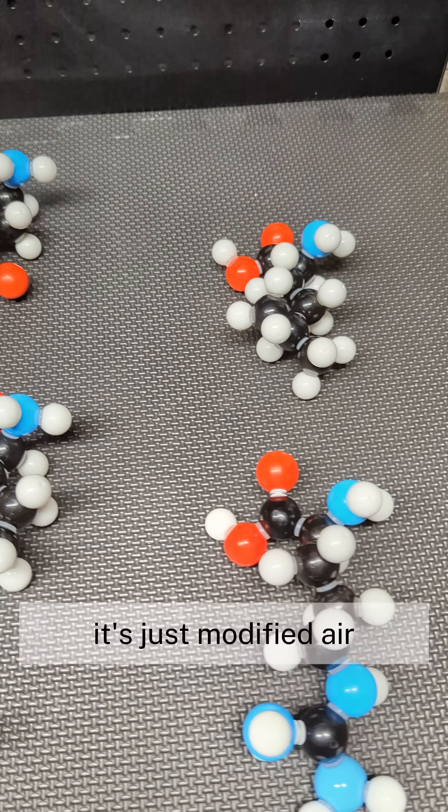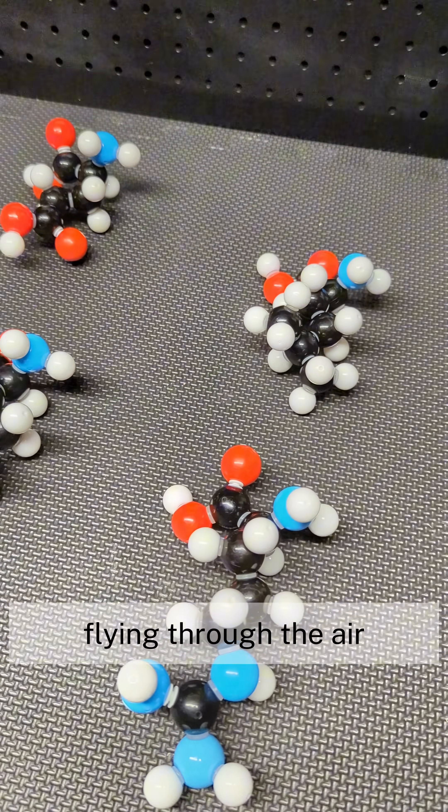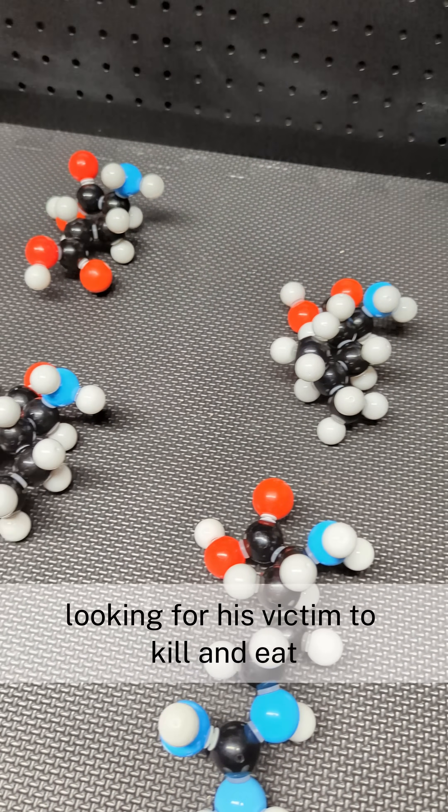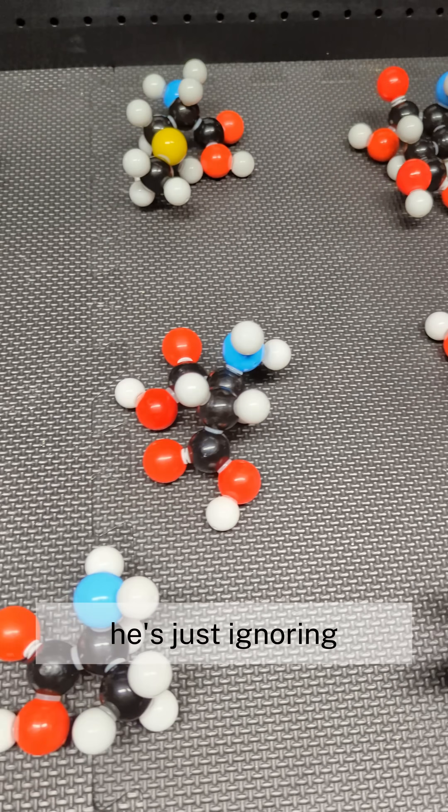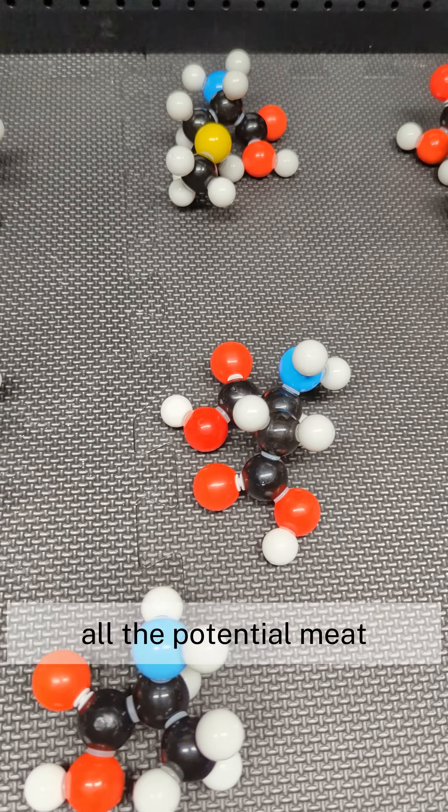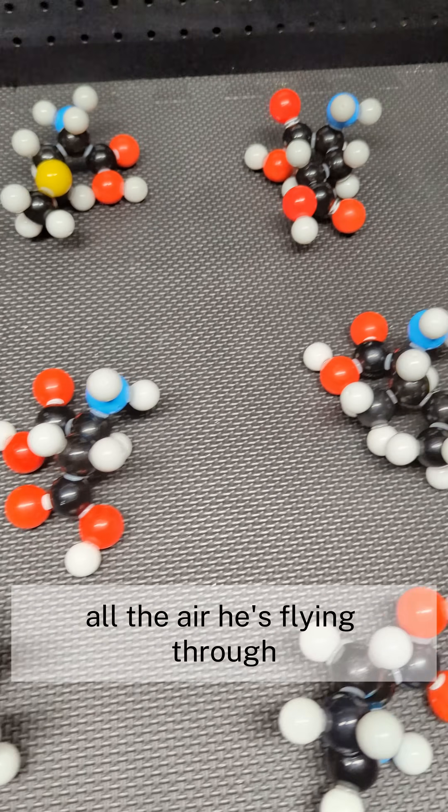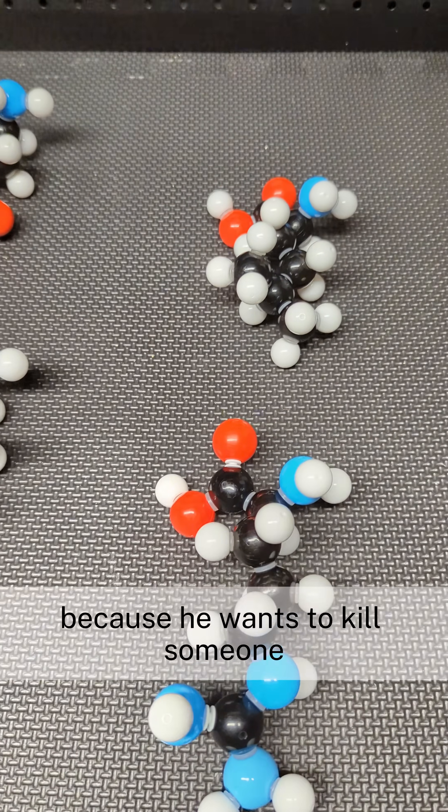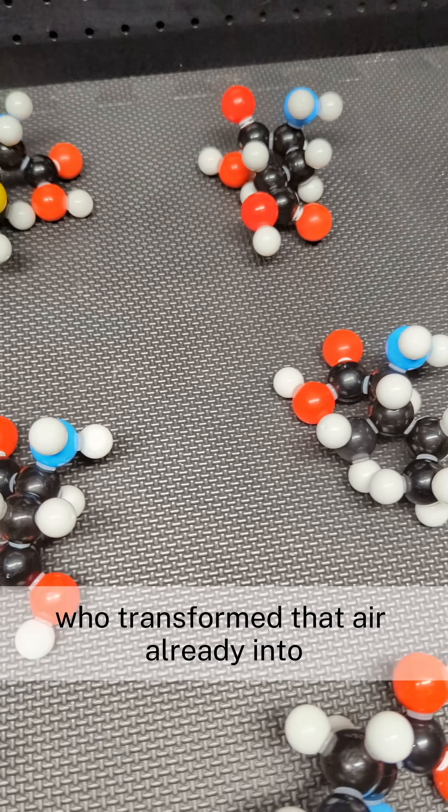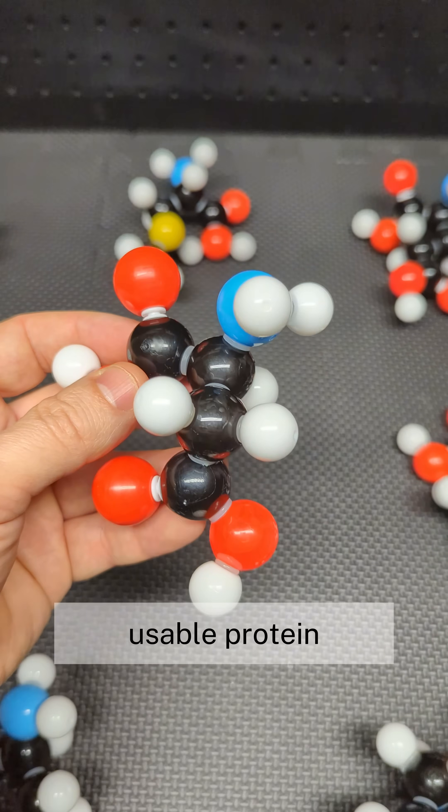It's just modified air. So when a hawk is flying through the air, looking for his victim to kill and eat, he's just ignoring all of the potential meat that he's flying through, all the air he's flying through, because he wants to kill someone who'd transform that air already into usable protein form.